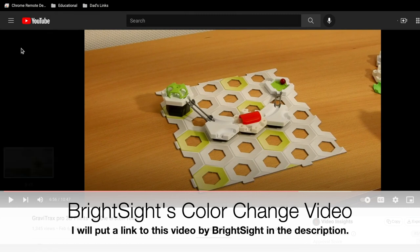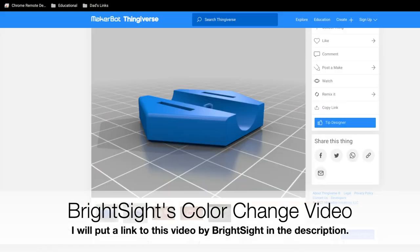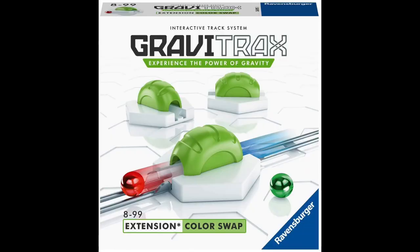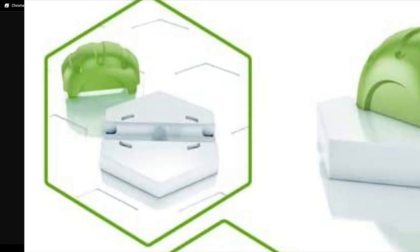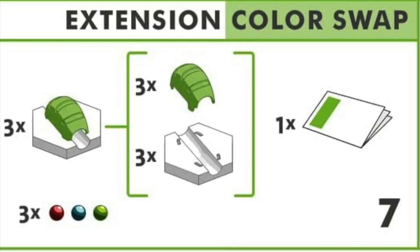And BrightSight has placed a video on YouTube, so we're going to watch this real quick. Because we can already do this if you have a 3D printer. You don't have to buy the GraviTrax expansion. Okay, so that's the idea of the color changer.